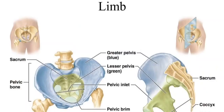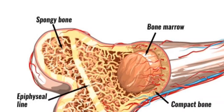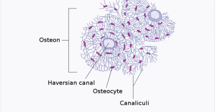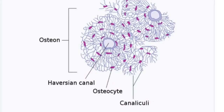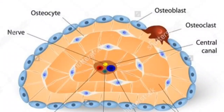Structure of Bones: Compact bone tissue is composed of osteons and forms the external layer of all bones. Spongy bone tissue is composed of trabeculae and forms the inner part of all bones. Four types of cells compose bony tissue: osteocytes, osteoclasts, osteoprogenitor cells, and osteoblasts.